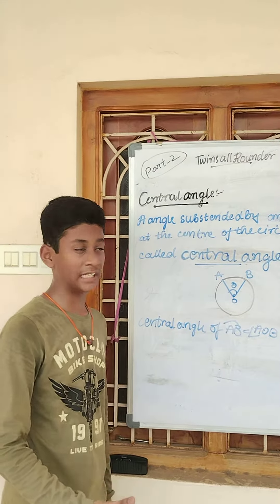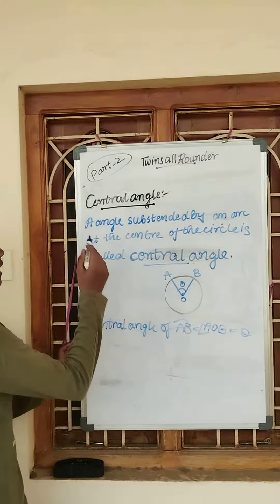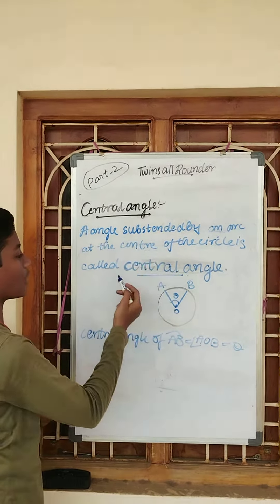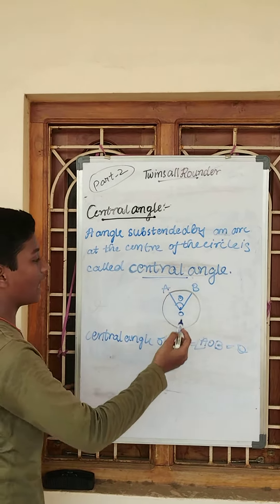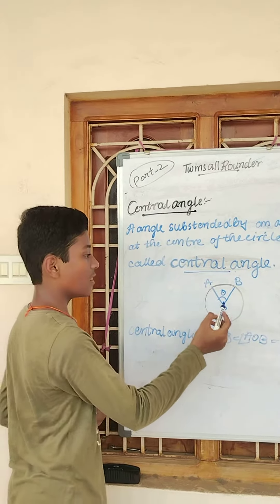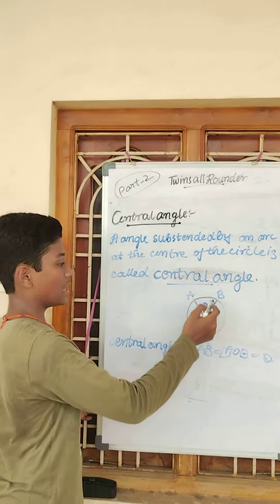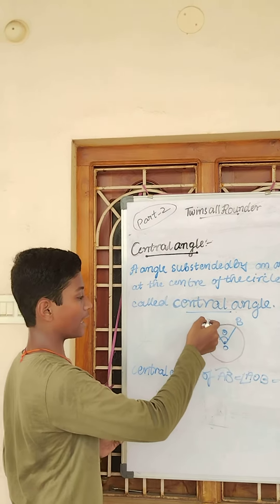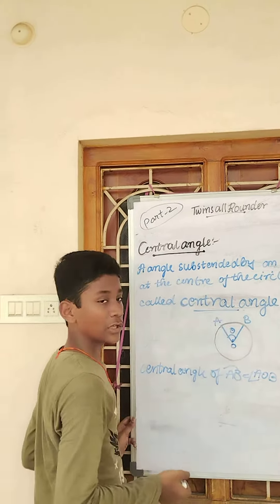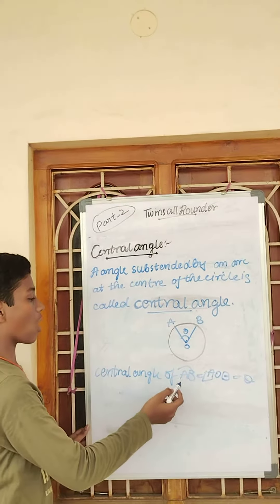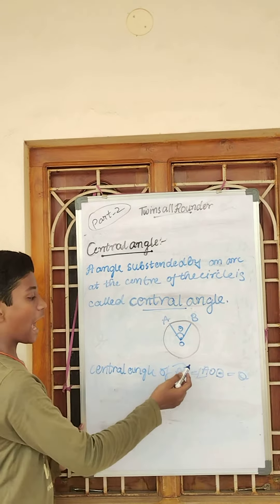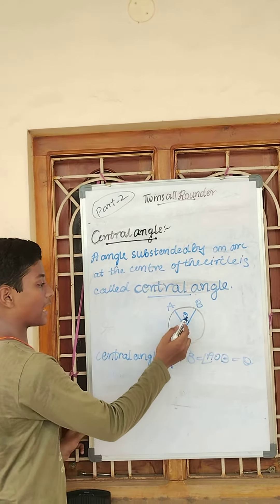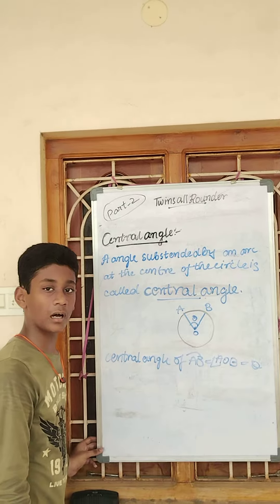Central angle. What is central angle? An angle subtended by an arc at the center of the circle is called a central angle. As you can see in this image, the arc AB is at the center and forming angle AOB. So we can write: central angle of arc AB is equal to angle AOB is equal to theta.